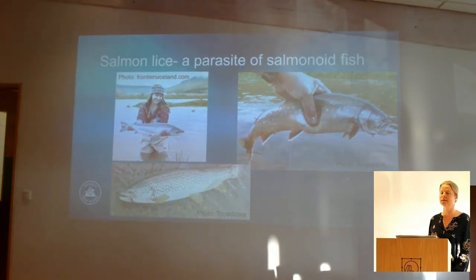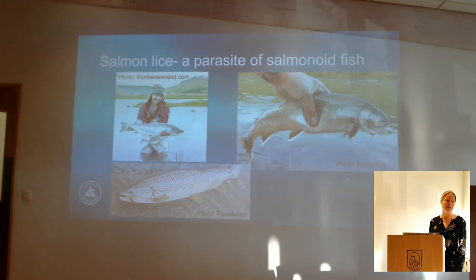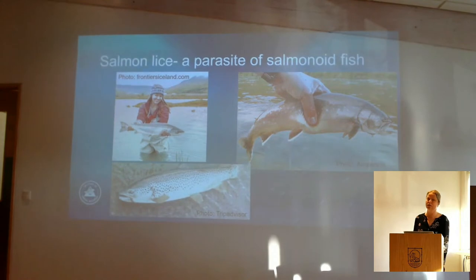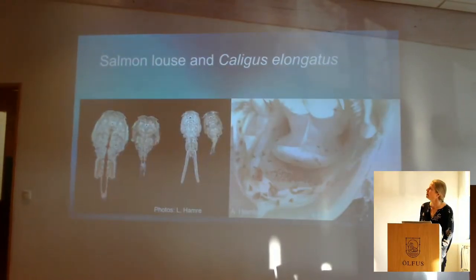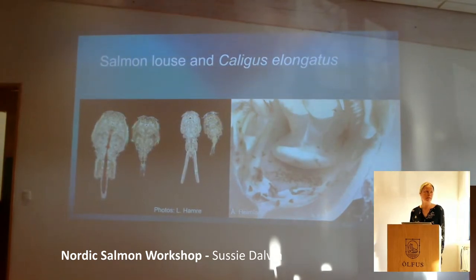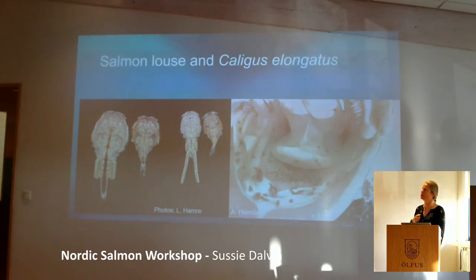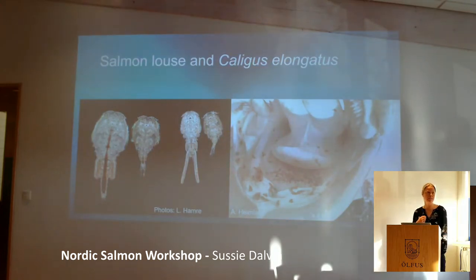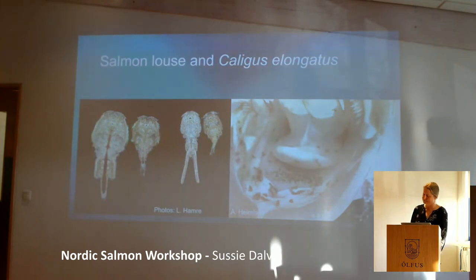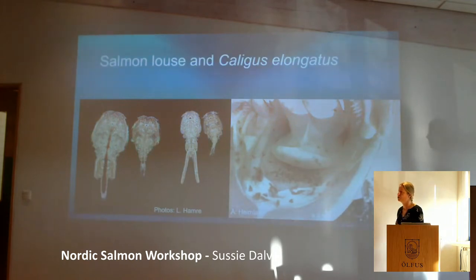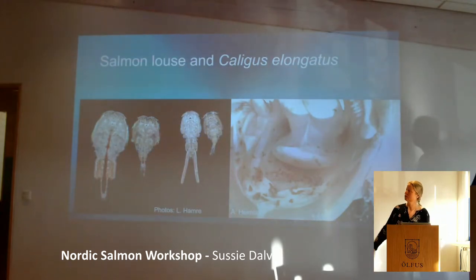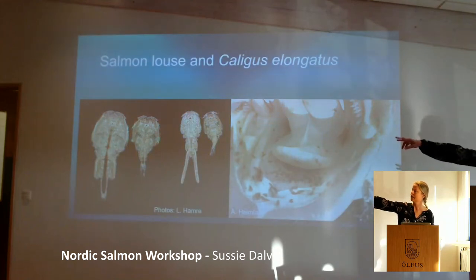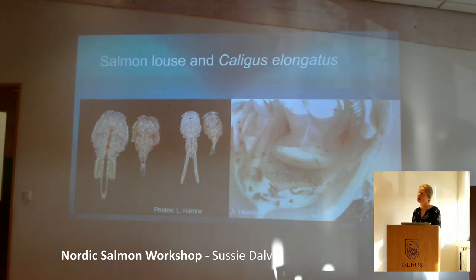Salmon lice has been, and is still, a problem in all salmon farming areas. Here in the North Atlantic it's salmon lice, and in the Pacific you have other species, but it's pretty much the same story. We also have a different species called Caligus elongatus - in Norway we call it the Scottish lice. If you look at the picture to the left, you see the salmon lice female, which is very large, then a male, and then a female and male Caligus elongatus. They look very similar - it's only really in the adult stage that it's easy to see the difference.